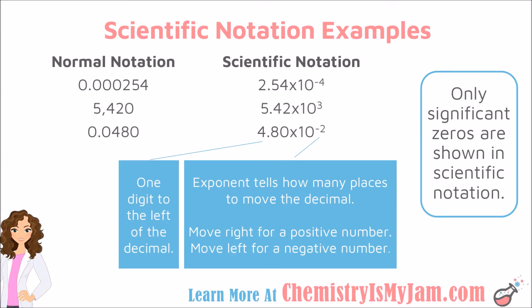Let's look at some more examples where I have given you a number in scientific notation and I am going to show you how to go from that to normal notation. Whether the exponent is positive or negative tells you which direction to move the decimal. For example, 2.54 times 10 to the negative 4th — that negative 4 tells me I am going to be moving the decimal to the left, 4 places. All the empty spaces get zeros, so the number becomes 0.000254.